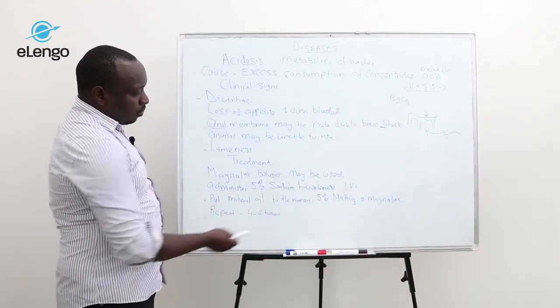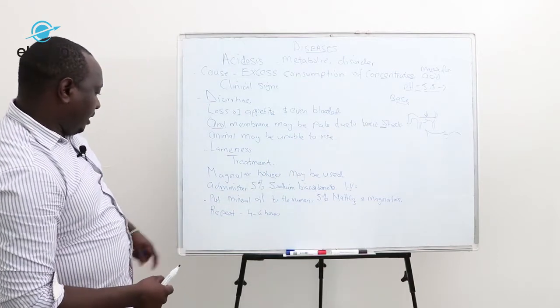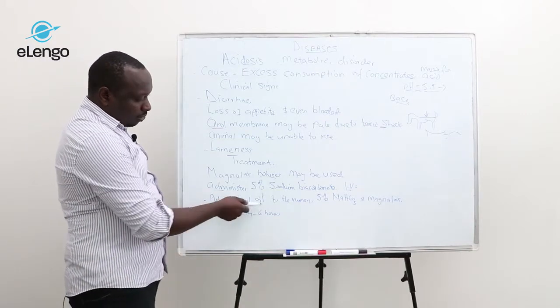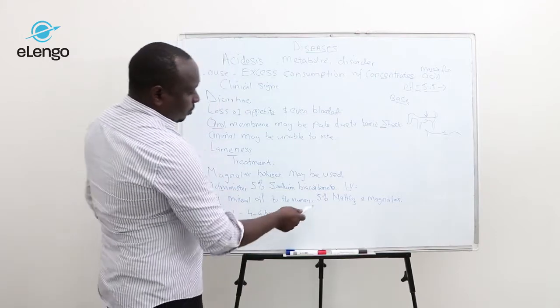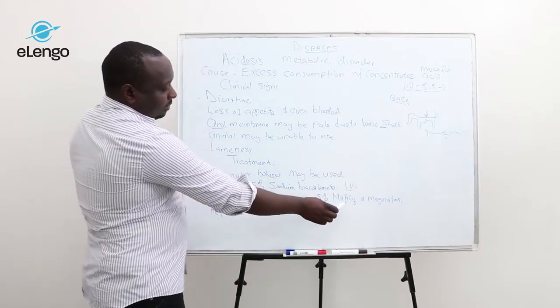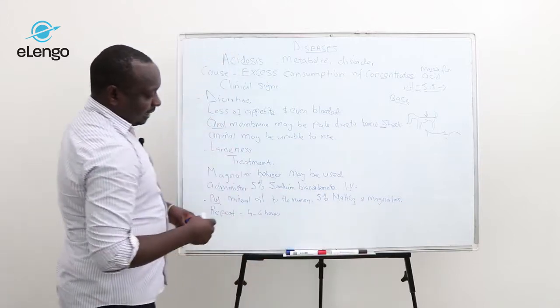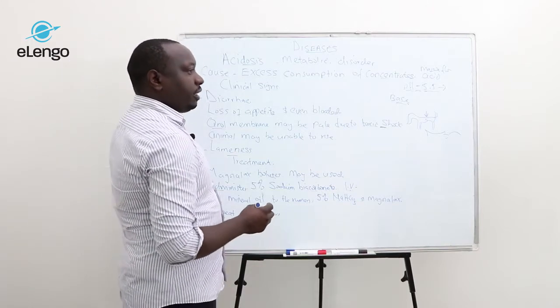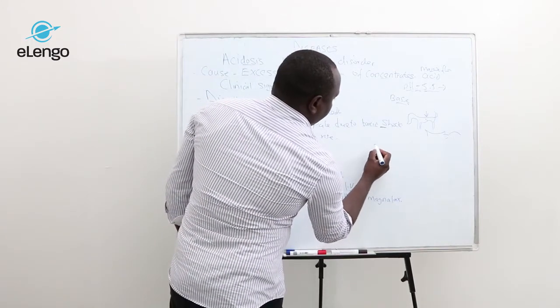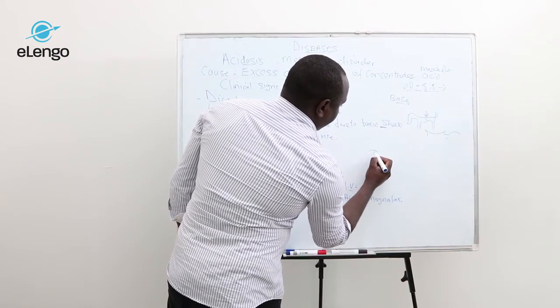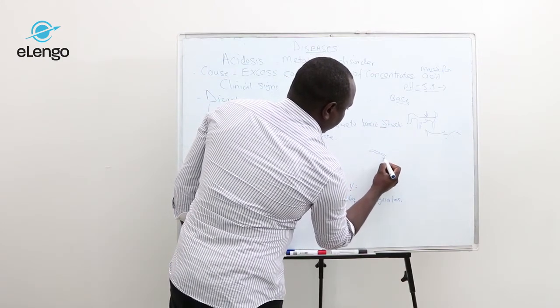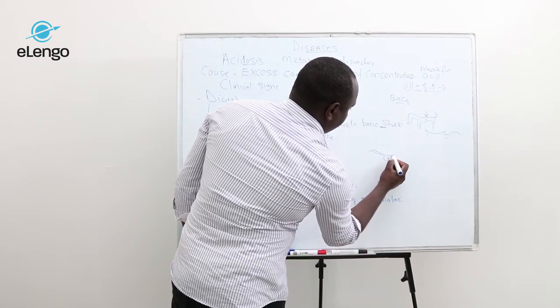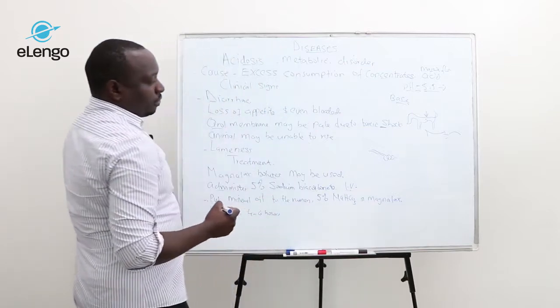Another method is introducing mineral oil into the rumen, along with 5% sodium bicarbonate and Magnalax. This is done using a tube. This is the GIT of the animal, these are the four stomachs.